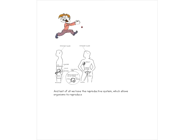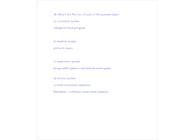Okay, and this guy's running here. And here we have the reproductive system, which, of course, allows organisms to reproduce. Okay, so let's just look at the function of some of these different systems. The circulatory system, what does it do? Well, it transports food and gases. It circulates from around and around. The skeletal system, it protects organs, supports the body as well. The respiratory system brings useful gases in and removes waste gases. The nervous system, it controls involuntary response. And remember, you always have a stimulus, something like a loud noise or whatever, causes a response. You run away from the noise. You shut it off.